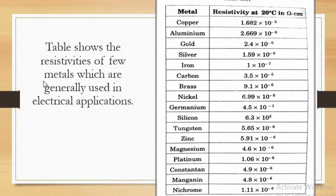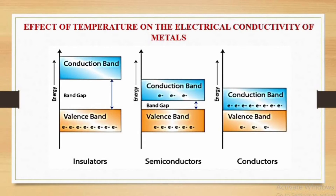The table shows the resistivities of a few metals generally used in electrical applications. Resistivity is given at 20°C in ohm-centimeter. Copper has resistivity 1.682 × 10⁻⁶ ohm-cm, aluminum 2.669 × 10⁻⁶ ohm-cm, gold 2.4 × 10⁻⁶ ohm-cm. Other metals listed include silver, iron, carbon, brass, nickel, germanium, silicon, tungsten, zinc, magnesium, platinum, constantan, manganin, and nichrome.